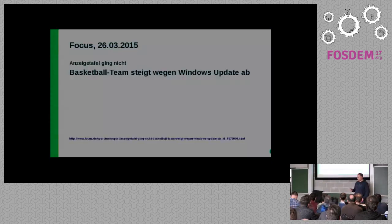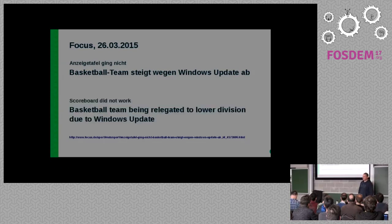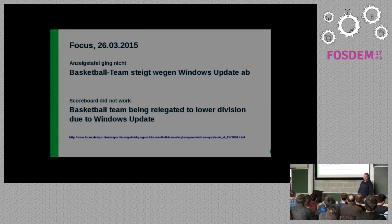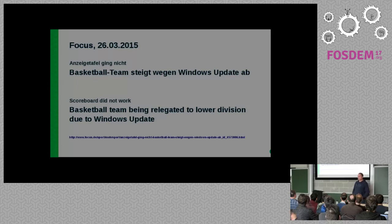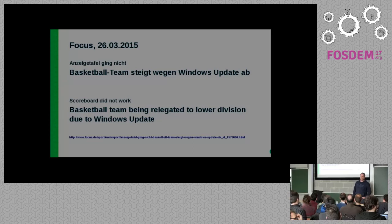About two years ago there was an article in a German newspaper. It's a rough translation. The scoreboard did not work, and that was the reason why a basketball team was being relegated to a lower division due to a Windows update. Before the match would start, they had problems with their Windows PC driving the scoreboard and keeping time. They decided to reboot the machine, all the Windows updates were applied, and the game started about 20 minutes late. They won the game, but on the green table later it was decided they lost it, and they were relegated to a lower division.